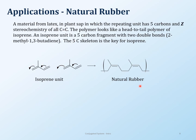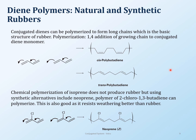Now for some applications of conjugated systems. Natural rubber, obtained from plant sap, is actually a conjugated system with many double bonds. We'll learn about reactions of conjugated systems to understand why certain things have certain properties. Natural rubber and synthetic rubbers differ — for example, one has a cis double bond and another a trans double bond.